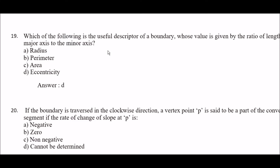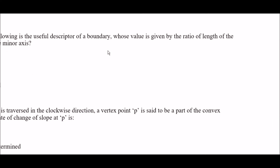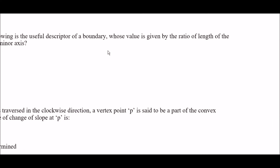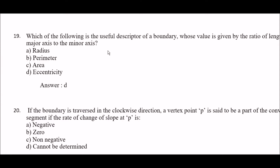Question 19: which of the following is the useful descriptor of a boundary whose value is given by the ratio of the length of the major axis to the minor axis? Option A: radius, option B: perimeter, option C: area, option D: eccentricity. The right answer is option D — eccentricity.